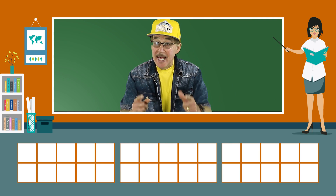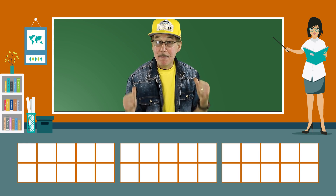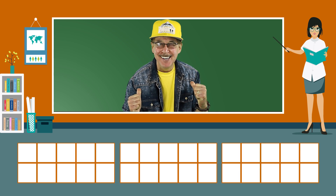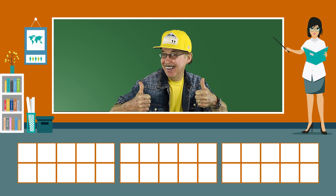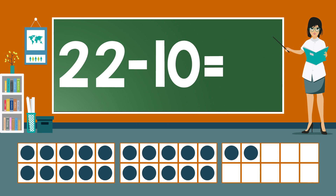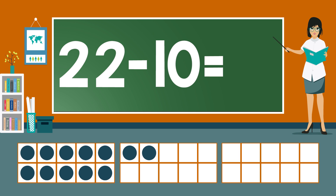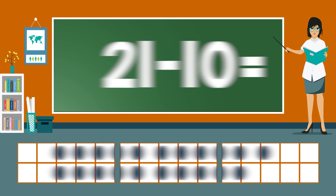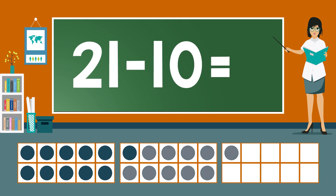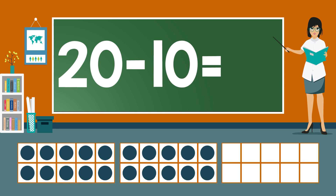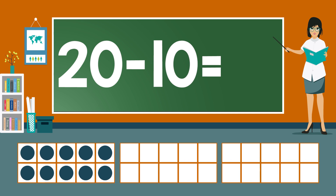Now you answer before me. 22 minus 10 equals... 12. 21 minus 10 equals... 11. 20 minus 10 equals...